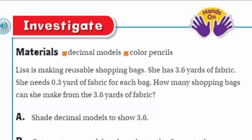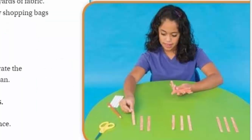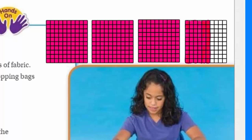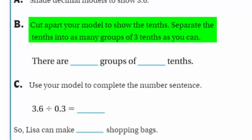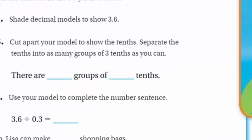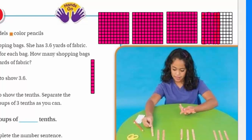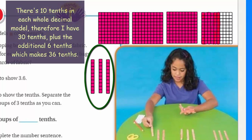I'm going to actually get out base ten blocks. I've shown my three and six-tenths — I have my three wholes and then my six-tenths that are shaded, because it says shade the decimal models to show three and six-tenths. Now it says cut apart your model to show the tenths, and separate the tenths into as many groups of three-tenths as you can. I can't cut these apart here, but what I can do is start making a group of three-tenths — here's three-tenths in one group. I'm trying to make as many groups as I can, because the problem says she needs three-tenths yard of fabric for each bag. So I know she can make at least one bag.